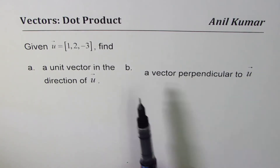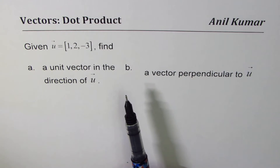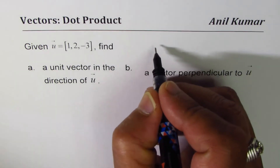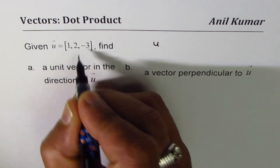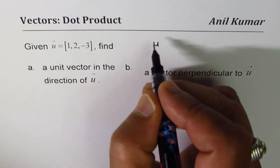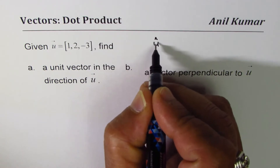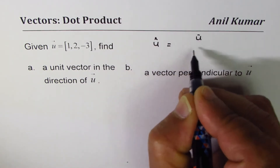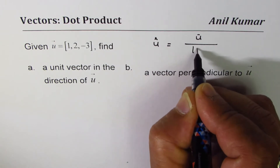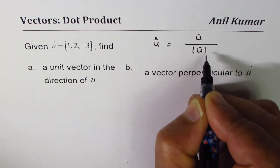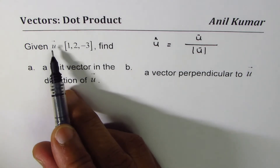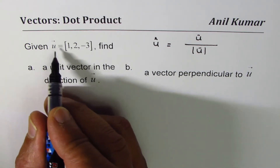A unit vector has a magnitude of 1, and it can be found by dividing the vector by its magnitude. So the unit vector can be written as the vector divided by its magnitude — that gives us a unit vector.